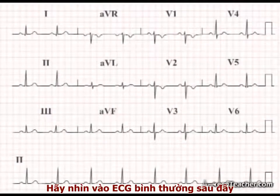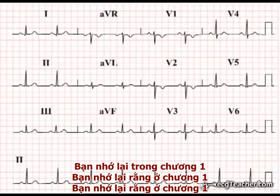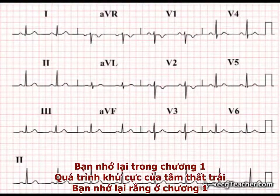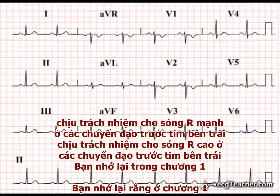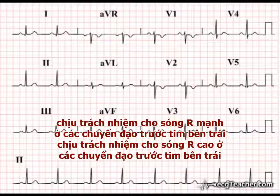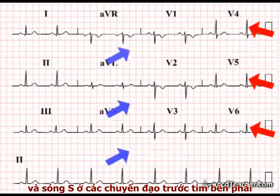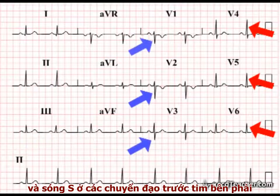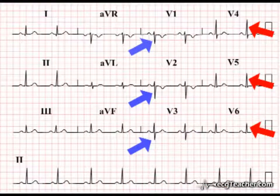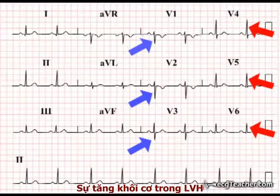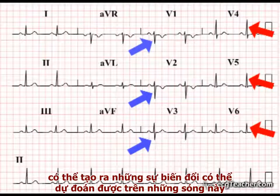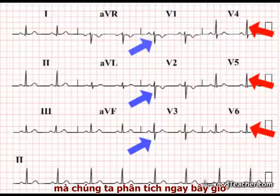Looking at this normal ECG, you will remember from section 1 that left ventricular depolarization is responsible for the prominent R waves in the left-sided chest leads and the S waves of the right-sided chest leads. The increased muscle mass associated with LVH produces predictable changes in these deflections, which we will now analyze.